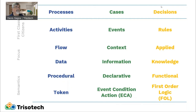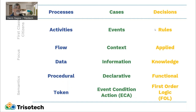When we move to DMN for decisions, the first class citizens are the rules. These rules are expressed in many different ways — the rows within a decision table or the rules within literal or box expressions. When information is applied we're dealing with knowledge, so DMN is more about knowledge. Its main architectural pattern is functional, and the execution semantic is based on first order logic.